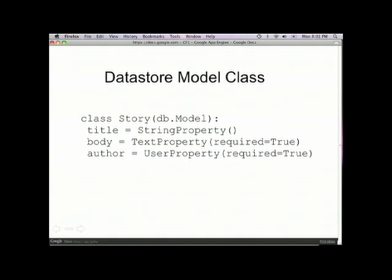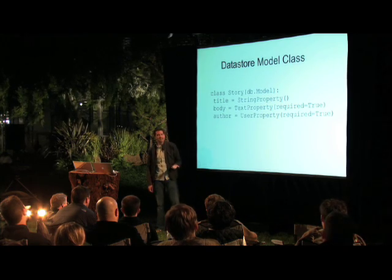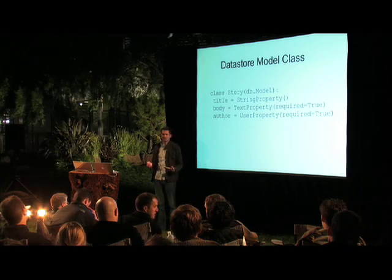Now I'm going to dive in a bit more on a model class, which is the way that we primarily expose the data store. You saw Brett use it a little bit ago. This right here is defining a model class for a story — something like a typical news story you might see on a news site. This is just a normal Python class — nothing special about it; it's just an interface we're using to get down to the data store. I've defined three properties here: a title, which is type string — meaning it's indexed and you can query on it — and a body property, which is type text, meaning it is not indexed but can hold much more information.